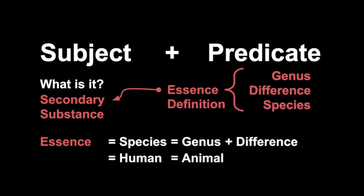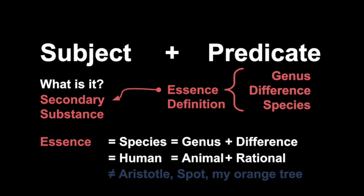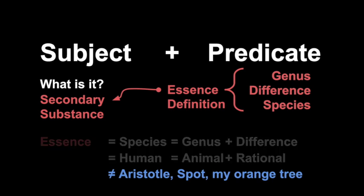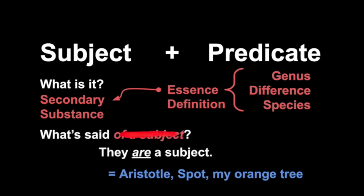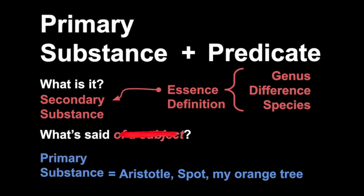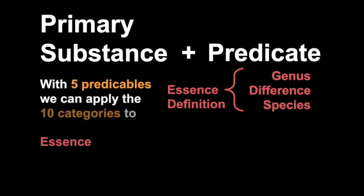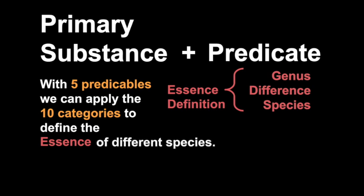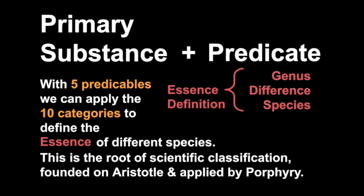Aristotle, Spot, and my orange tree are not essences—they're not secondary substances. They are not said of a subject; they are a subject. That is to say, a primary substance. We have primary substance, which is a subject, an individual subject, and secondary substance, which is an essence or a definition. With the five predicables, we can apply the ten categories to define the essence of different species. This is the root of scientific classification, founded on Aristotle and applied by Porphyry.